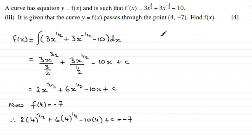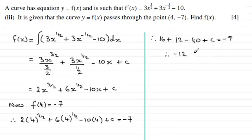So it's just a question of solving this equation and getting what c is. So if we simplify our terms here. 4 to the power 3 over 2, square root of 4 is 2, 2 cubed is 8, 2 times 8 is 16. Then we've got 6 times the square root of 4 which is 2, 6 times 2 is 12. Then minus 40 plus c equals minus 7. And so we've got here minus 12 then plus c equals minus 7. And from this if we add 12 to both sides c is equal to minus 7 plus 12 which gives us 5.